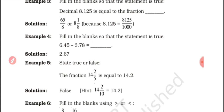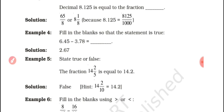Fill in the blanks so that the statement is true: 6.45 minus 3.78 equals blank. Finding the difference, we get 2.67.